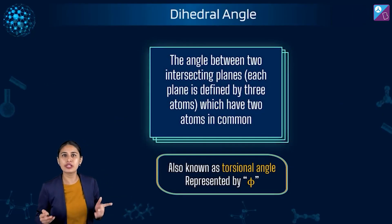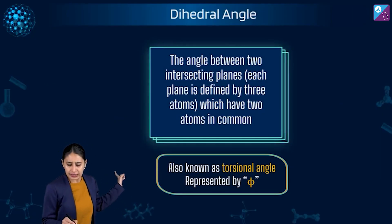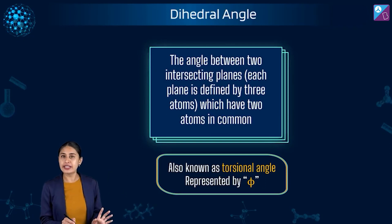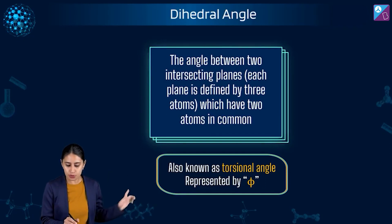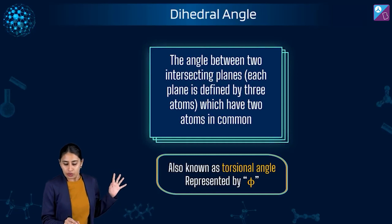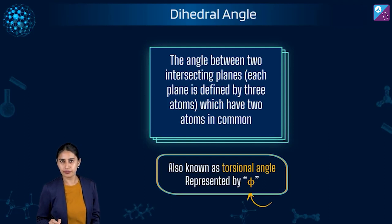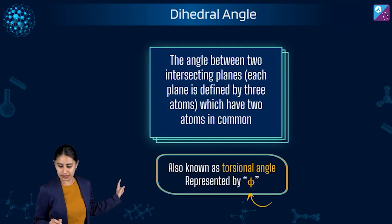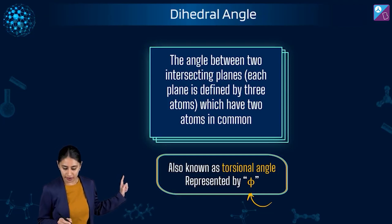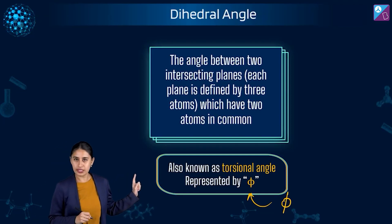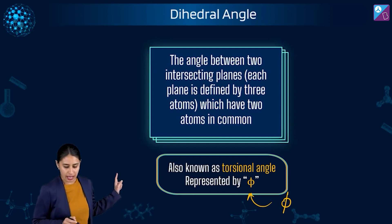What are dihedral angles? The angle between two intersecting planes. Each plane is defined by three atoms, which have two atoms in common. Also known as torsional angle, represented by this symbol — phi. This is how we represent it. Please see the angle between two intersecting planes.